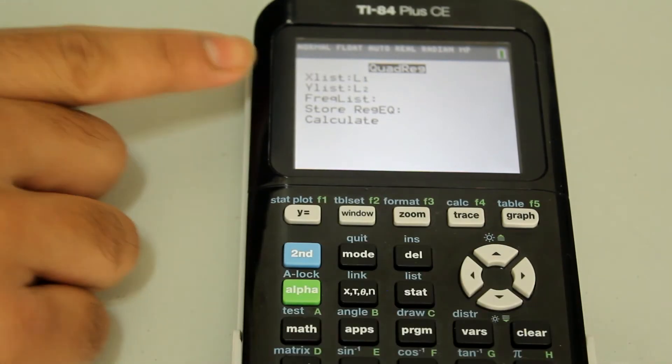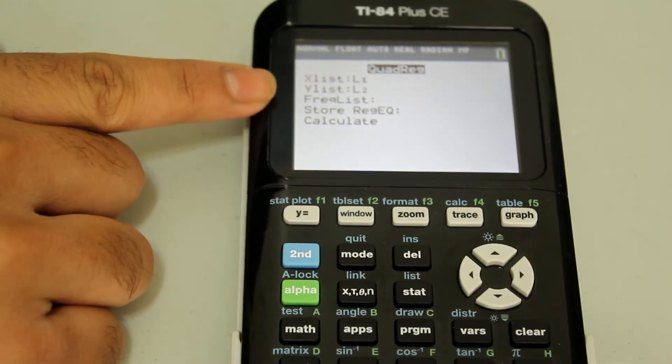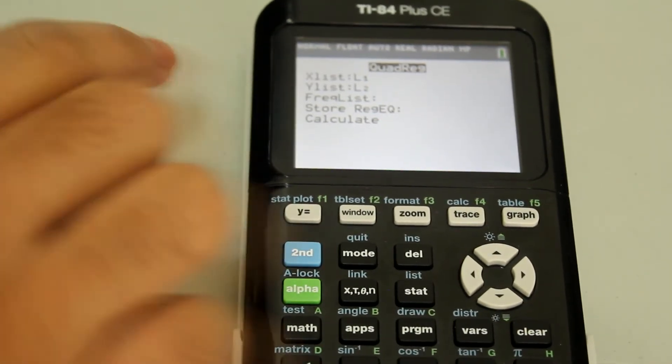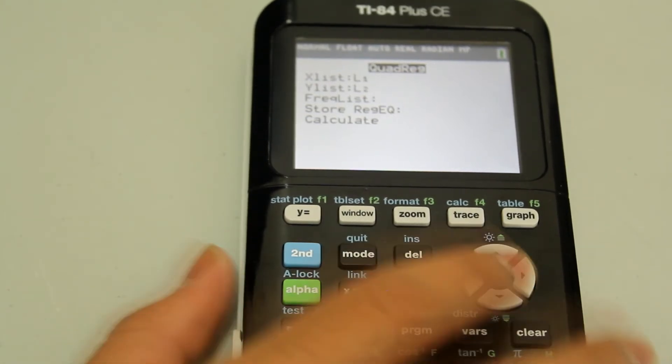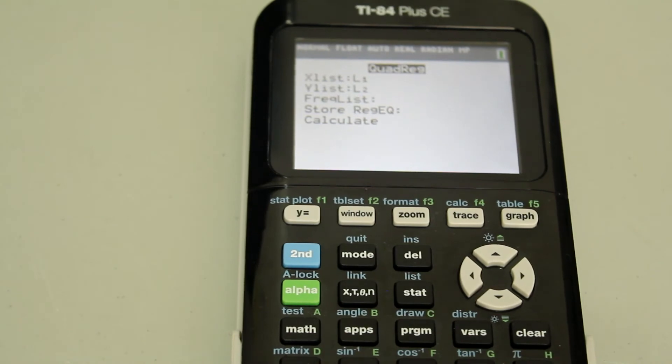Now we want the X values to be L1 and the Y values to be L2. And when it says store regression, go down to that. When the cursor is next to store regression equation,